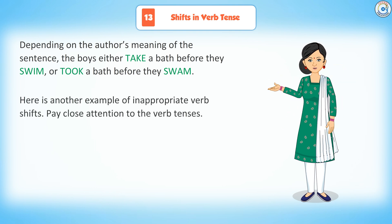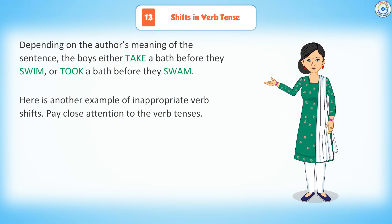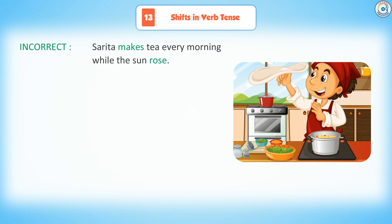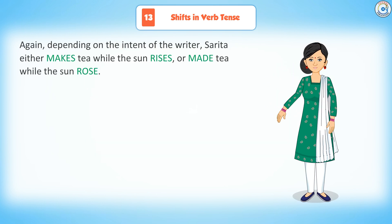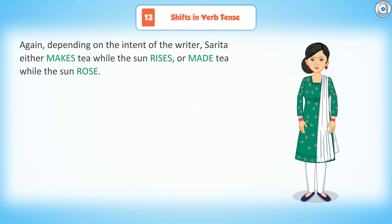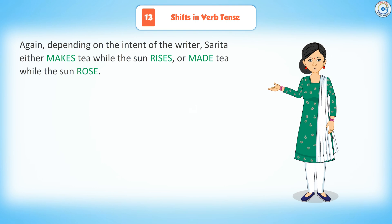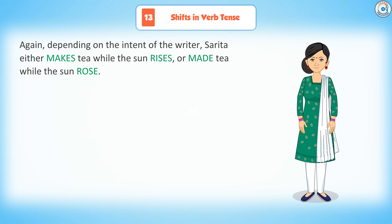Here is another example of an inappropriate verb shift. Pay close attention to the verb tenses. Incorrect: 'Sarita makes tea every morning while the sun rose.' Correct: 'Sarita makes tea every morning while the sun rises.' Or: 'Sarita made tea every morning while the sun rose.' Again, depending on the intent of the writer, Sarita either makes tea while the sun rises, or made tea while the sun rose.